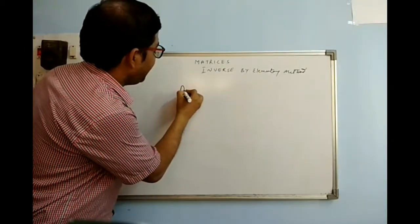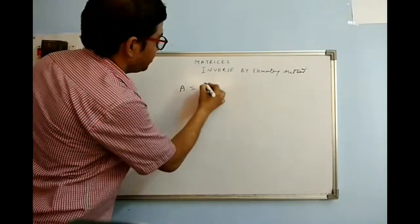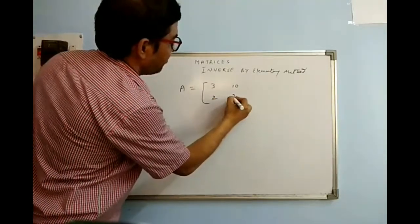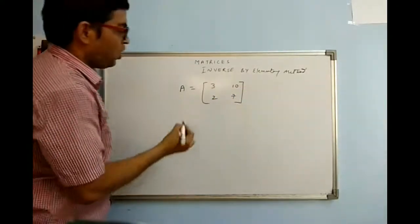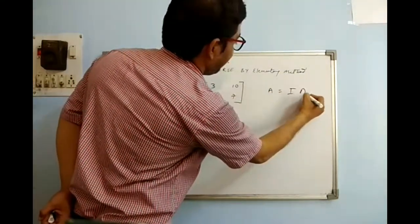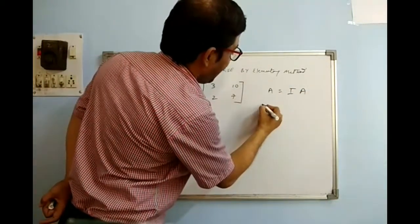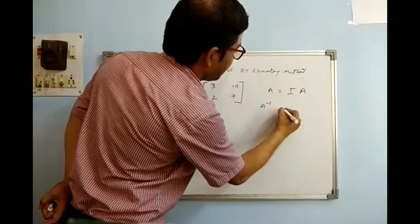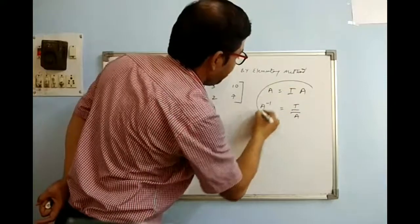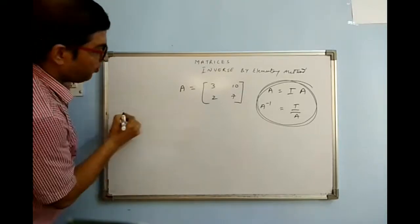We will find the inverse with the help of the elementary method. Suppose I am taking the question matrix [3, 10; 2, 7]. One basic thing I have to follow is A = I·A, because I multiplied by anything gives the same thing. Finding A inverse, I have to use this throughout in our elementary method to find A inverse.